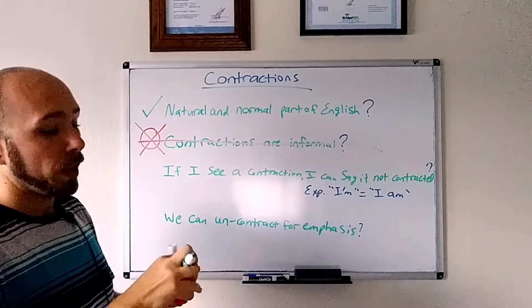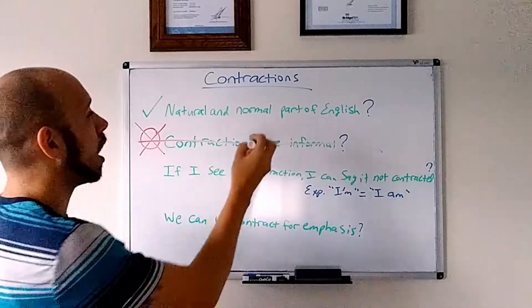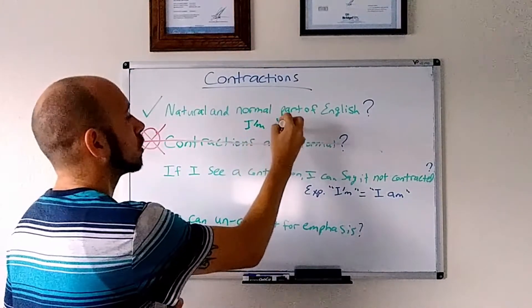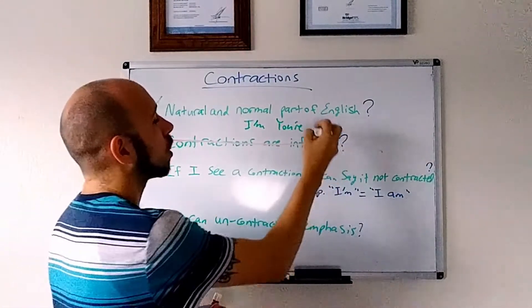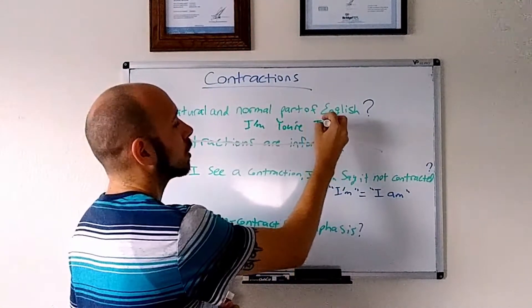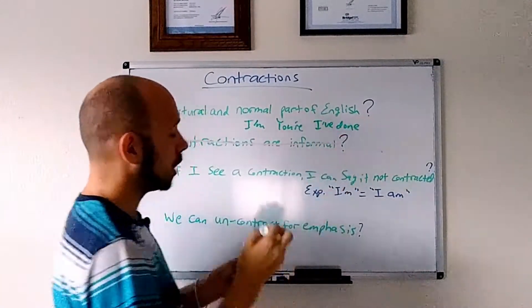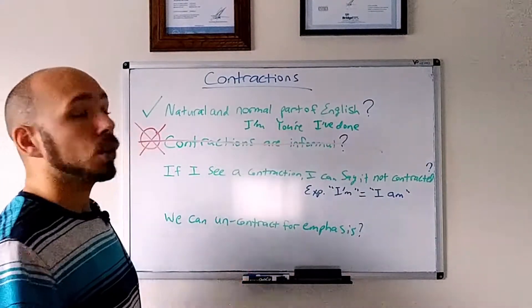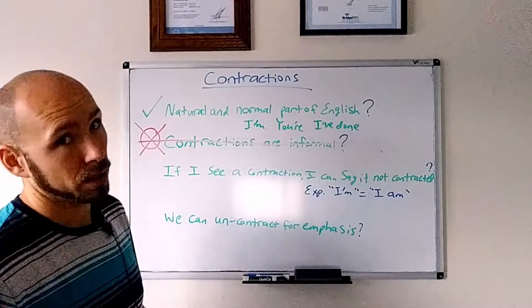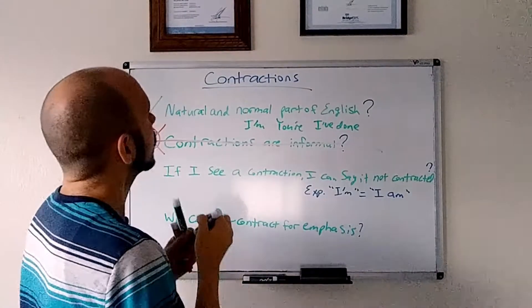we have many written contractions such as I'm, you're, often pronounced ear, or I've done with the present perfect. I've just some examples, as you probably know. But we also have even more spoken contractions that we don't write. For example, if I say,